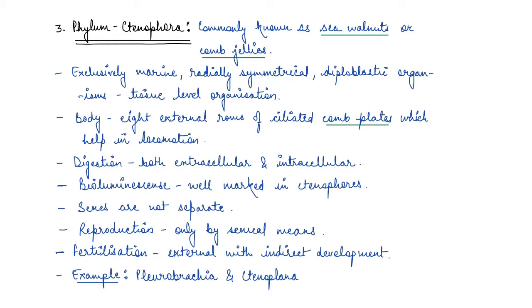In the first video we covered the basis of classification of all the animals, and then in the second video we covered the very first phylum which is Porifera and then the second phylum which is Cnidaria or Coelenterata. In today's video we are going to cover the next three phylum which is Ctenophora, Platyhelminthes and Aschelminthes. We'll start off with the phylum Ctenophora.